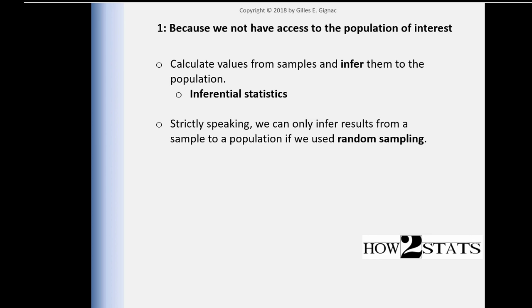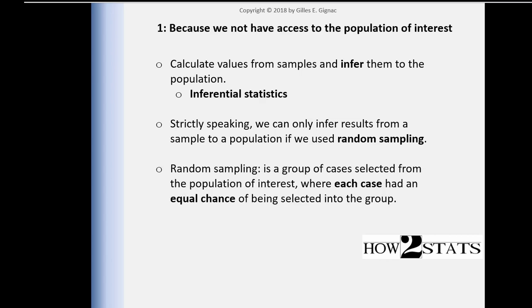Random sampling is an assumption of inferential statistics. This trick that statisticians have come up with — that allows us to make decisions about entire populations with a smaller subset of data — is based on random sampling. Random sampling represents a group of cases selected from the population of interest where each case had an equal chance of being selected into the group.